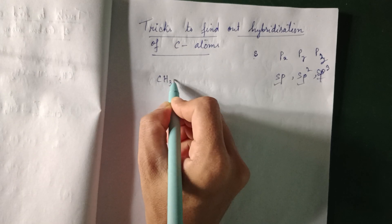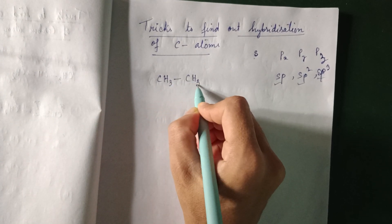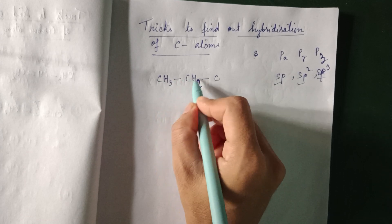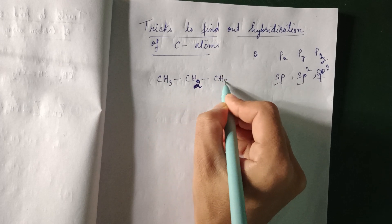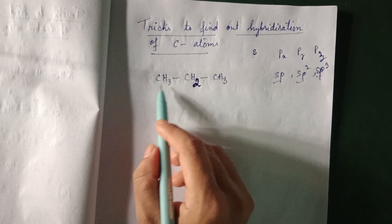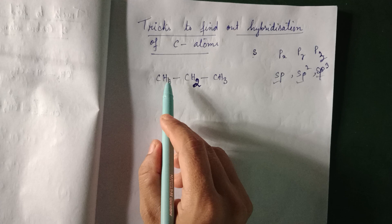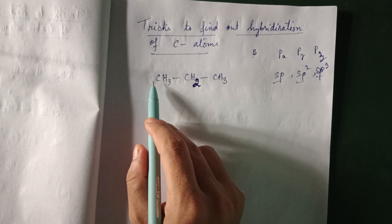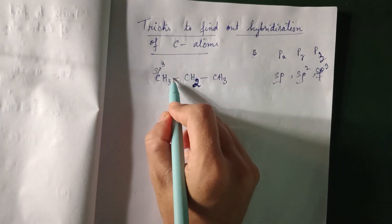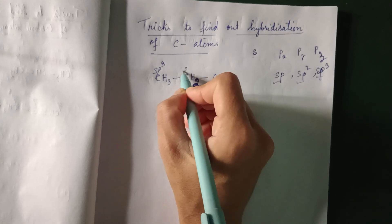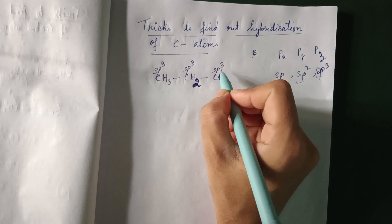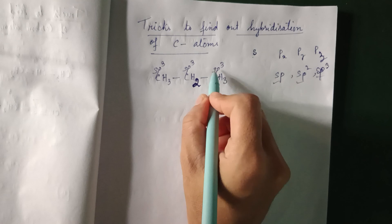Let us take a simple carbon compound. The methylene group in a chain is always CH2 and the terminal carbon is always CH3. Now, carbon has four bonds and all are single bonds — it has four valency and all four bonds are single bonds. Whenever all four bonds of a carbon are single bonds, that carbon is sp3 hybridized. So both these carbons are sp3.